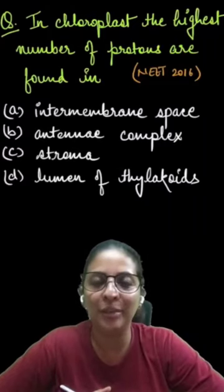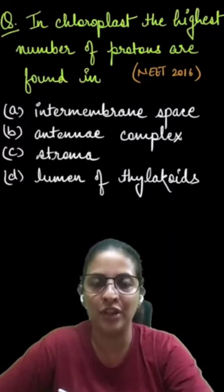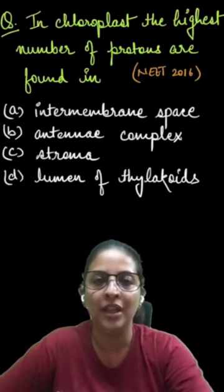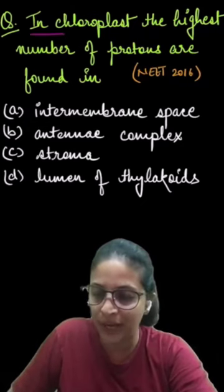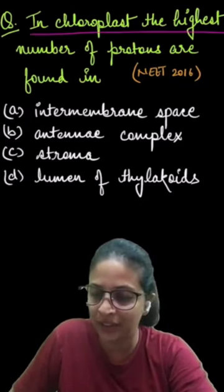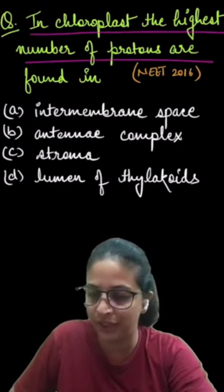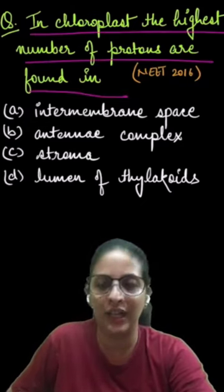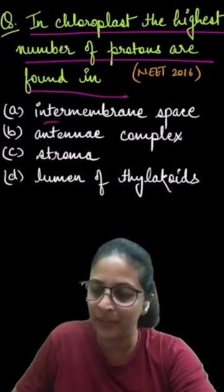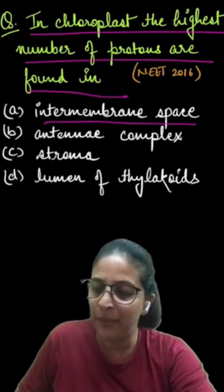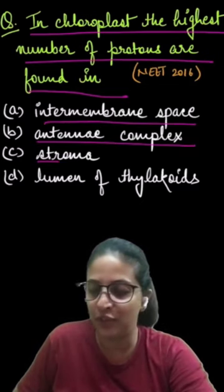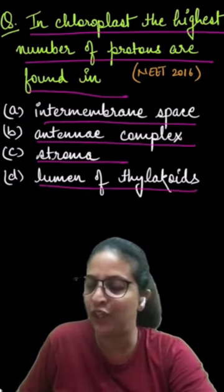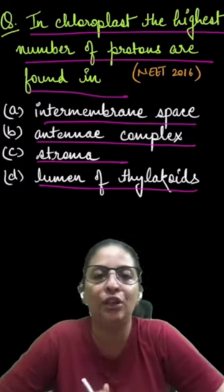Hey everyone, this is your Shruti ma'am and today we are going to solve this question in one minute. The question says: in chloroplast, the highest number of protons are found in — and the options are A) intermembrane space, B) antenna complex, C) stroma, and D) lumen of thylakoid.